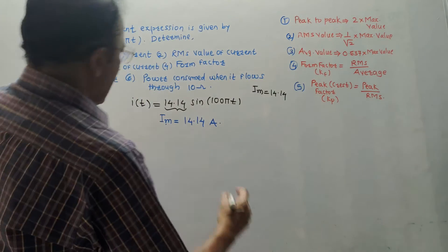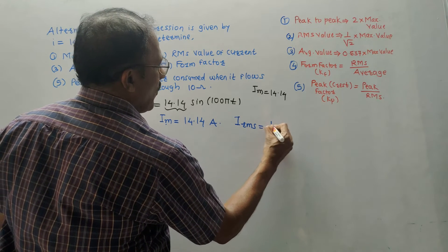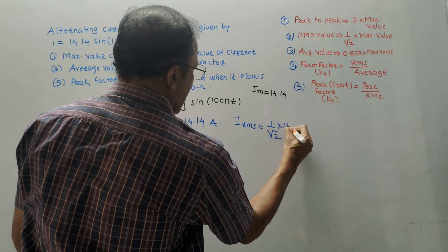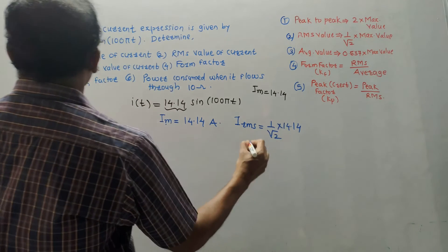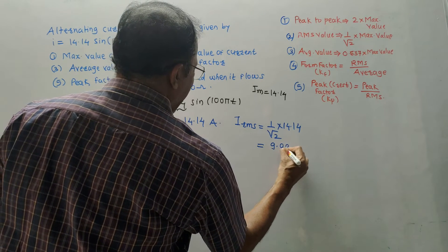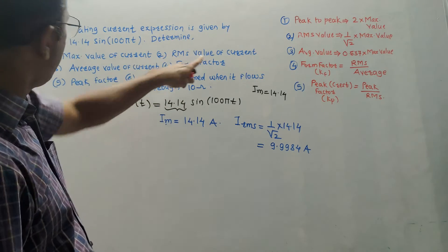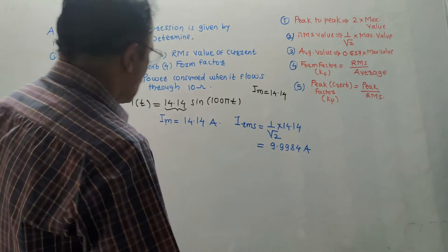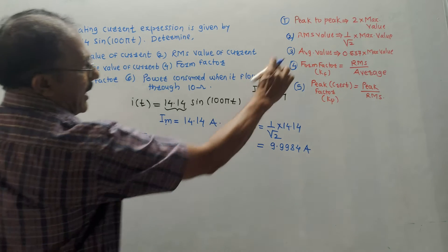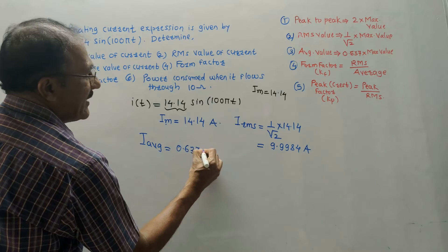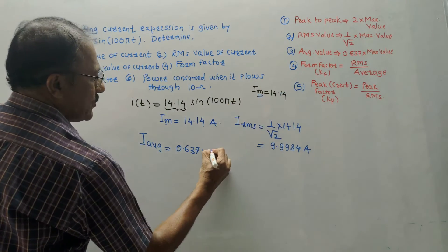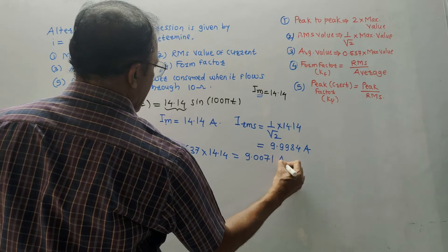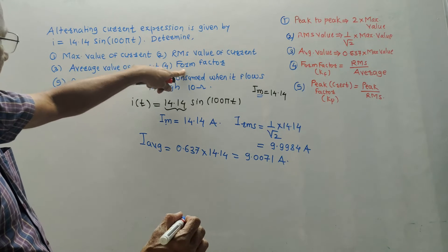The average value of current: I_avg = 0.637 × Im = 0.637 × 14.14 = 9.0071 A. The form factor: Kf = I_rms / I_avg = 9.9984 / 9.0071 = 1.11.